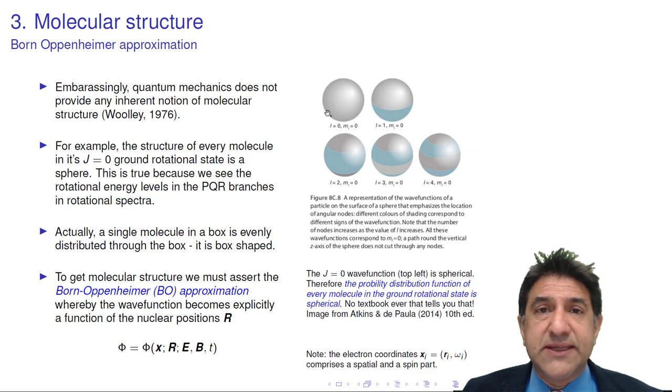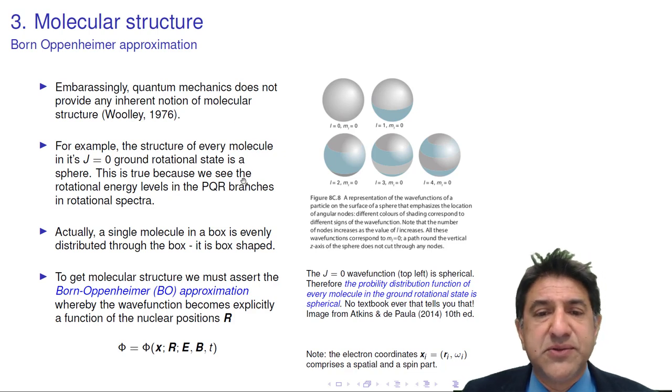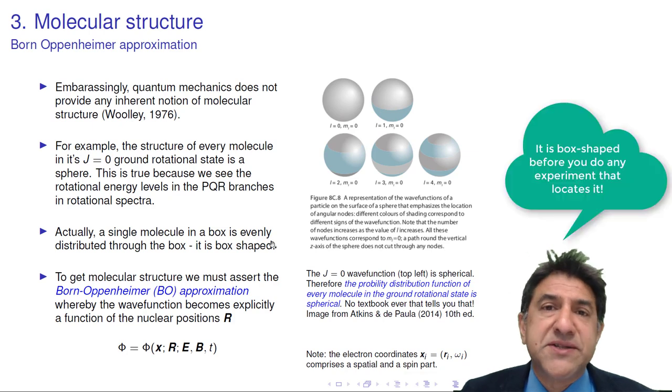Every molecule in its ground state has a completely spherical distribution of its atoms around the center of mass. How embarrassing is that? Of course, there's a relative difference between the nuclei, but that doesn't change the fact that every molecule is spherical. In fact, it's worse than that. If you have one molecule in a box, the molecule is free to translate anywhere in the box. So the molecule is actually box-shaped. Until such time as you do a measurement to find out where that molecule is.